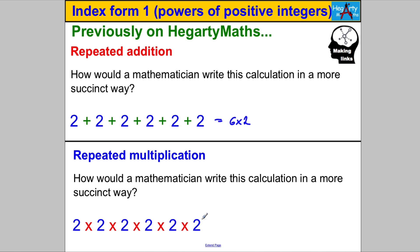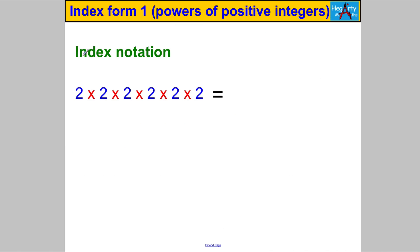2 multiplied by itself 6 times — a mathematician is bound to have a quick way of writing it. Well, they write 2 to the power of 6, and that means the number 2 is multiplied by itself 6 times. That's their shorthand way of doing it, because after all they are fairly lazy. So 2 times 2 times 2 times 2 times 2 times 2 — a mathematician would write 2 with a little number 6.